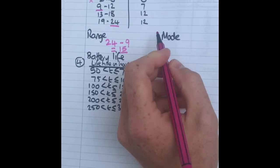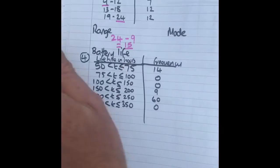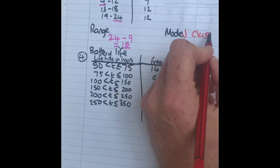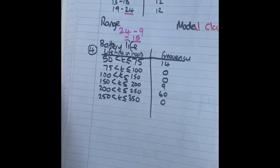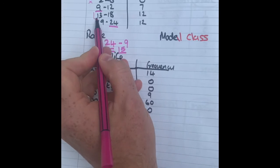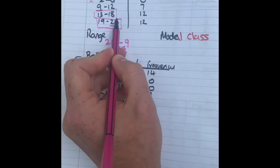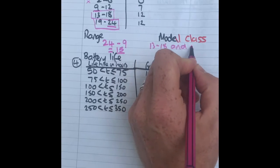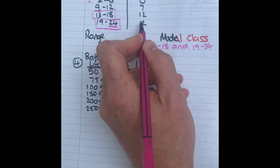Mode, which is the most common, this time you're doing what's called the modal class. That just means which group has got the most in. So which group's got the most? Well we've actually got two, those two: 13 to 18 and 19 to 24, because they both got 12.